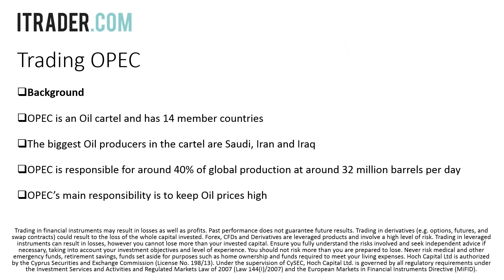Today we're talking about trading OPEC. Some background: let's talk about who and what OPEC is. For those who don't really know, OPEC is an oil cartel with 14 member countries. The biggest oil producers in the cartel are Saudi Arabia, Iran, and Iraq. We also have Algeria, Venezuela from South America, and others — 14 countries total that are part of this OPEC organization.